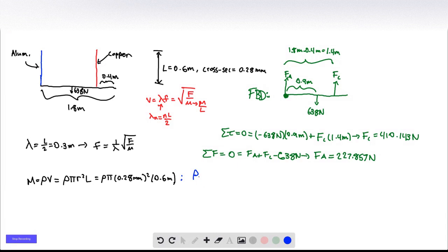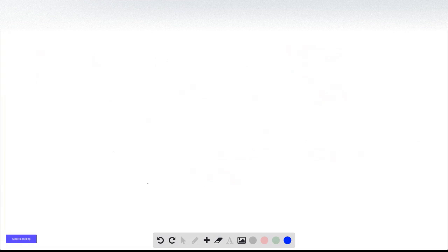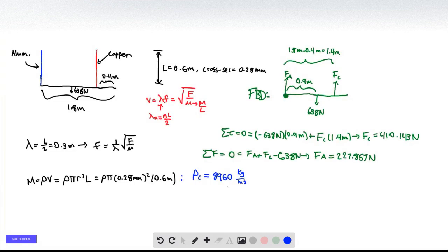And I'm going to give you these values right here. So the density of copper is equal to 8,960 kilograms per meter cubed. And then the density of aluminum is equal to 2,700 kilograms per meter cubed. And so we can plug these values in and get as follows.